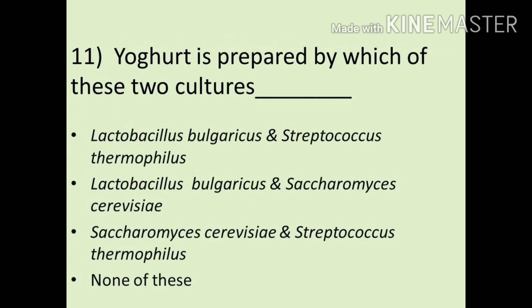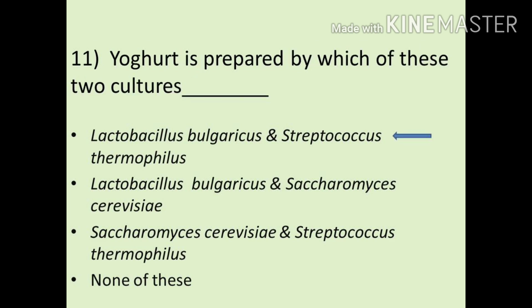Question number 11: Yogurt is prepared by which of these two cultures? Options are Lactobacillus bulgaricus and Streptococcus thermophilus; Lactobacillus bulgaricus and Saccharomyces cerevisiae; Saccharomyces cerevisiae and Streptococcus thermophilus; or none of these. The answer is Lactobacillus bulgaricus and Streptococcus thermophilus.